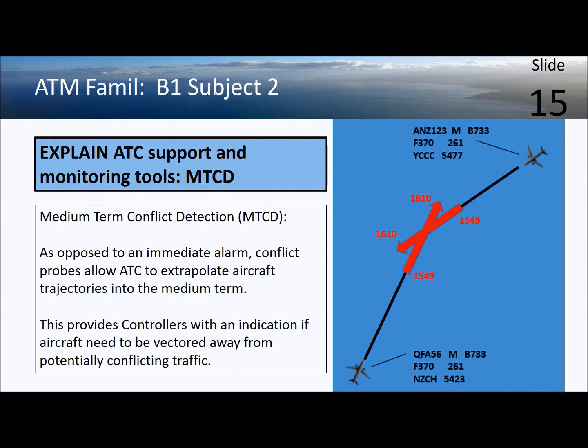Medium-term conflict detection probes allow ATC to look further into the future than short-term conflict alerts. They are used in oceanic flight where continuous surveillance tracking is not possible and conflict resolution must be anticipated much earlier. Communication may also be less reliable in these areas, and it may take longer to send instructions to either aircraft.